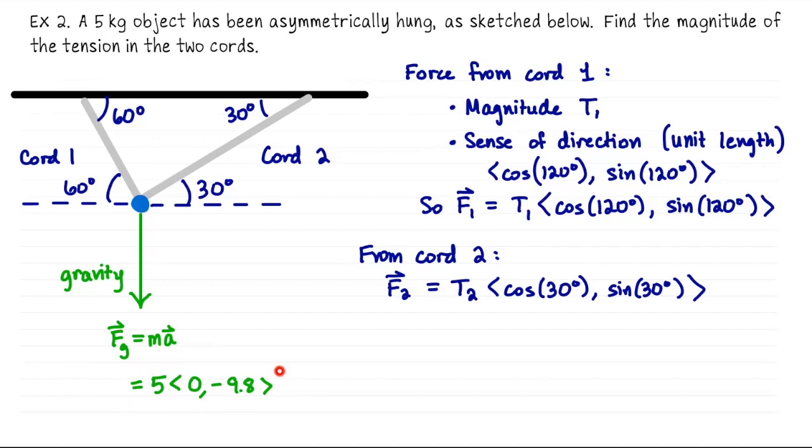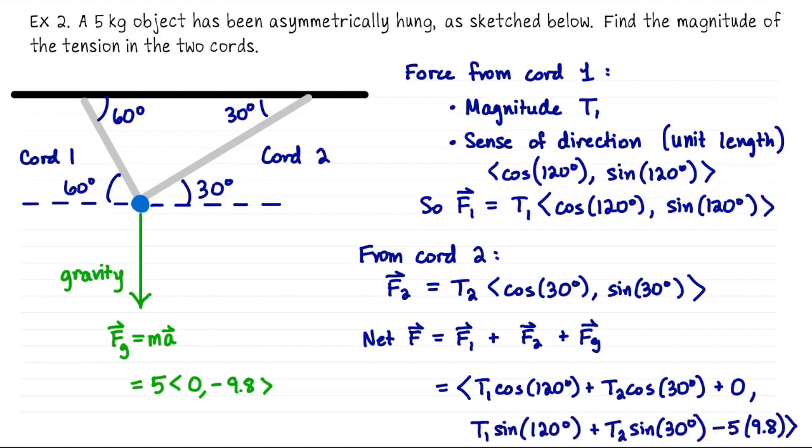We've already identified the force downwards due to gravity, so we can go ahead and add these together to get the net force acting on this object. It's just a vector sum, so we just go component by component and add them together. For my x-coordinates, it's T1 cosine 120 plus T2 cosine 30 plus 0. That's from gravity. And then for my y-components, it's T1 sine 120 plus T2 sine 30. And then minus 5 times 9.8. There, that's where we see the gravity.